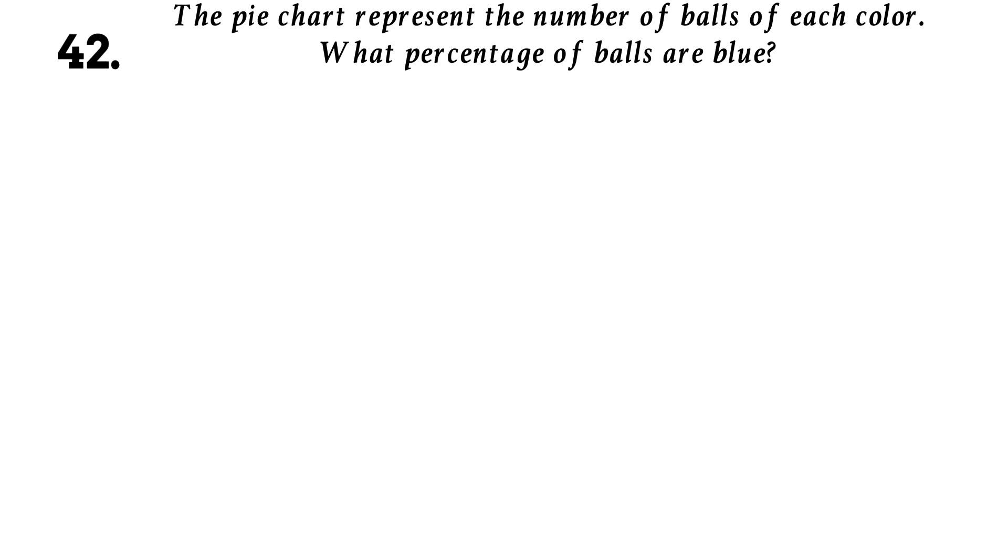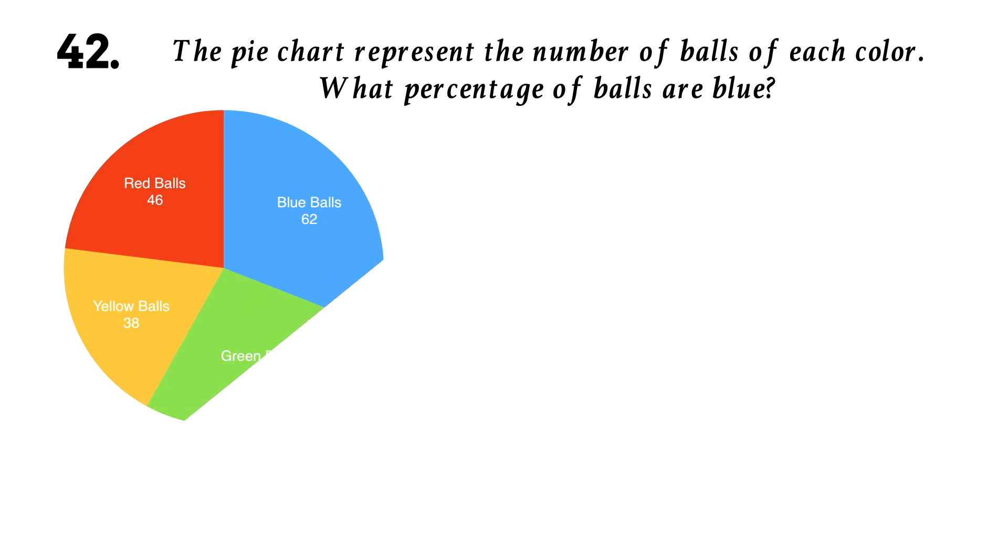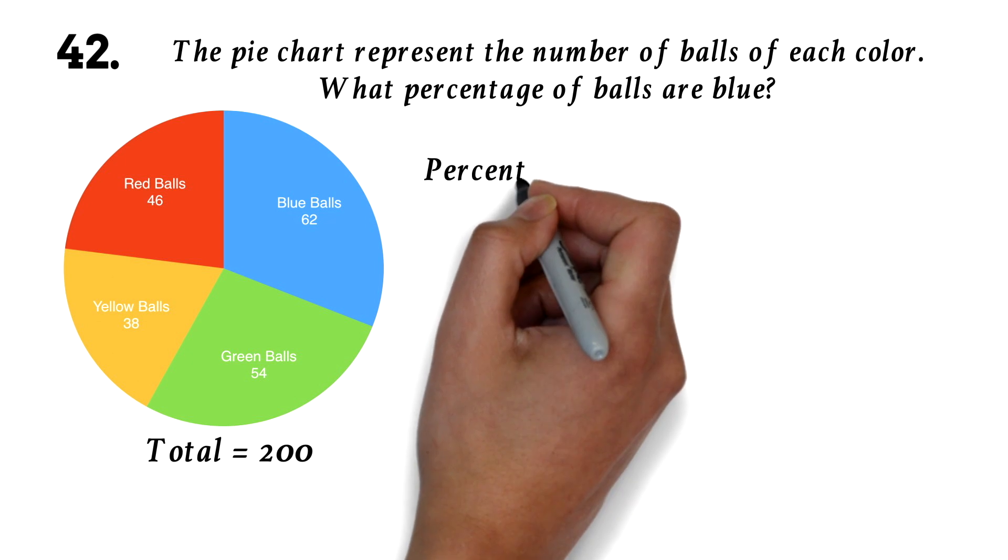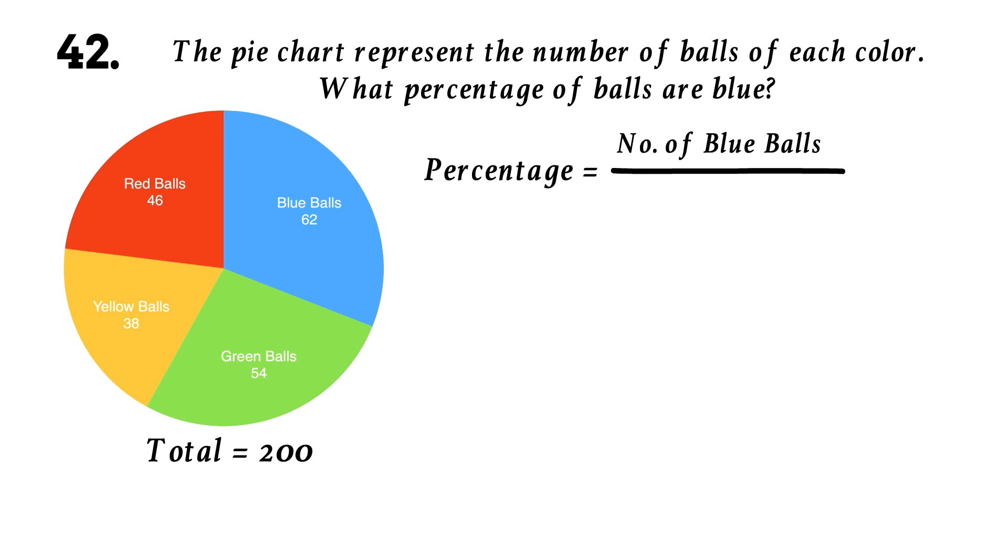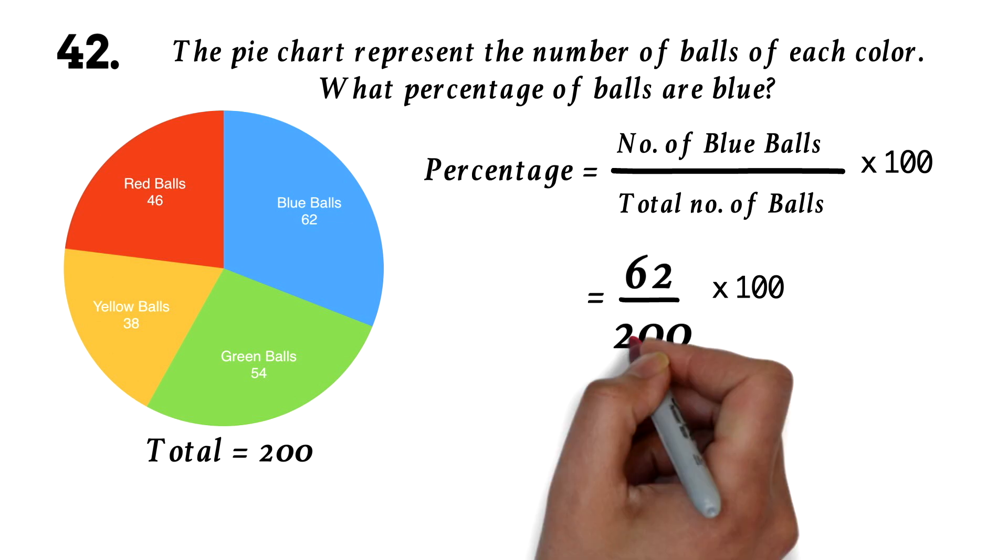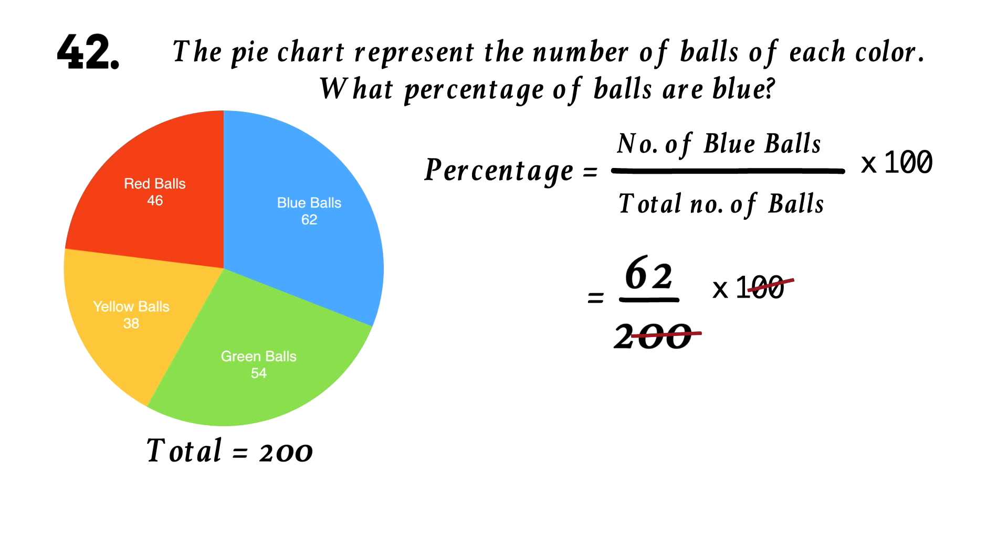Question 42. The pie chart represents the number of balls of each color. What percentage of balls are blue? This is the first kind of pie chart question on the GED. You are given the actual values and asked to find percentages. Please, it's the same way you'll solve it, if you're dealing with anything else. The percentage of blue balls will be the number of blue balls over the total number of balls times 100. So we have 62 over 200 times 100. After setting this up, the rest is your basic multiplication and division to get the answer. Here, the zeros will cancel out. 62 divided by 2 is 31. So 31% of the balls are blue.